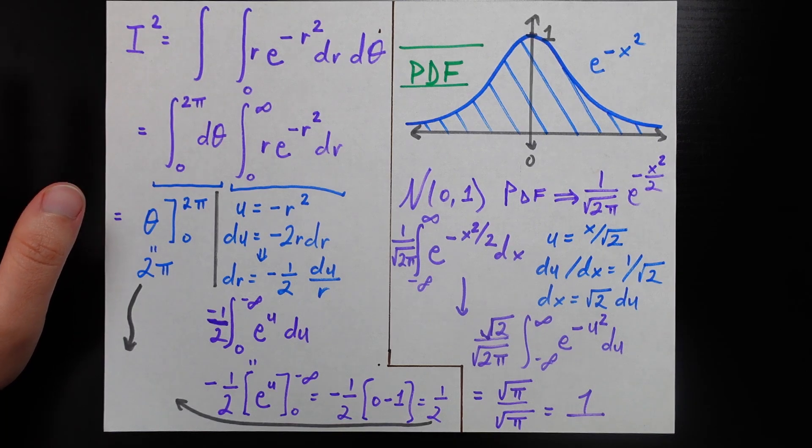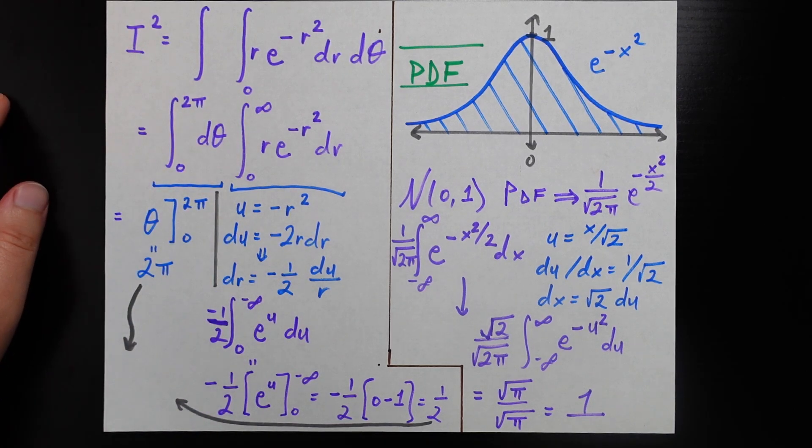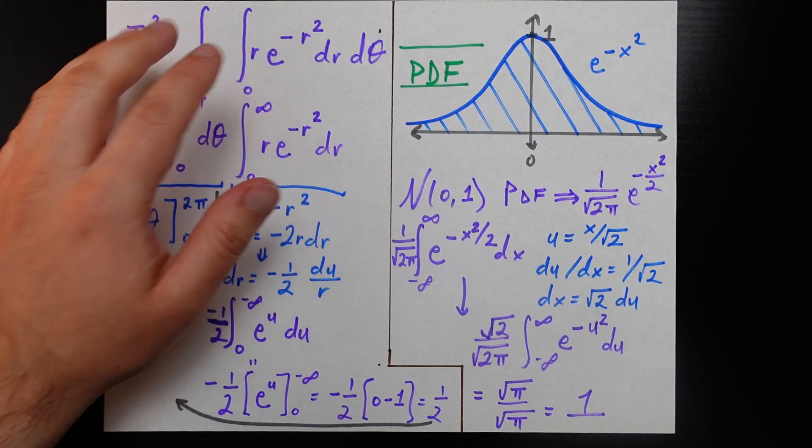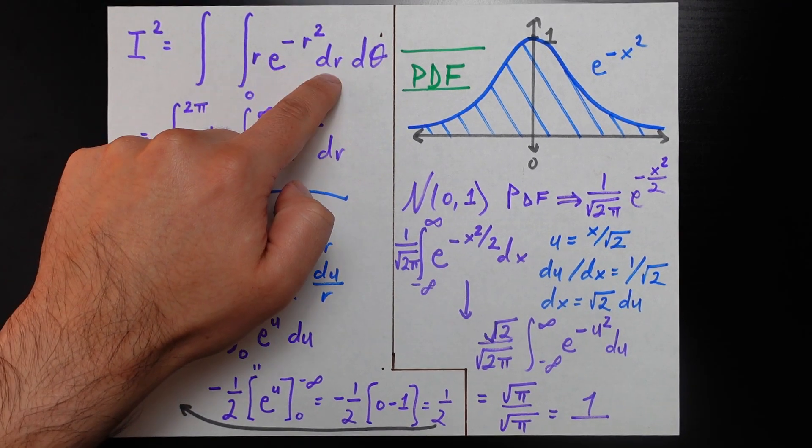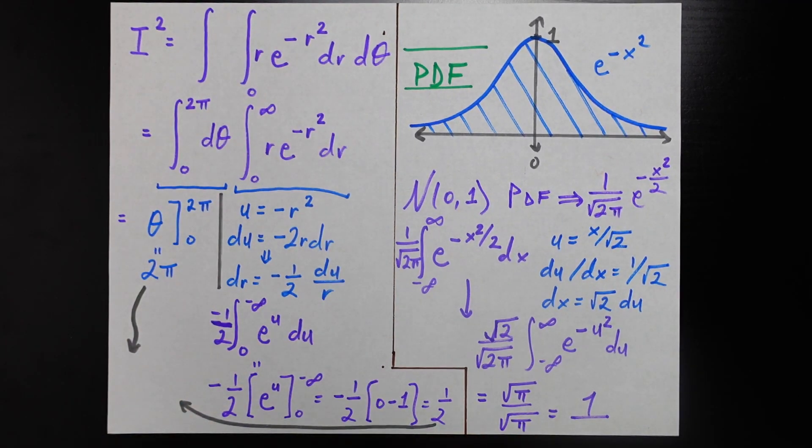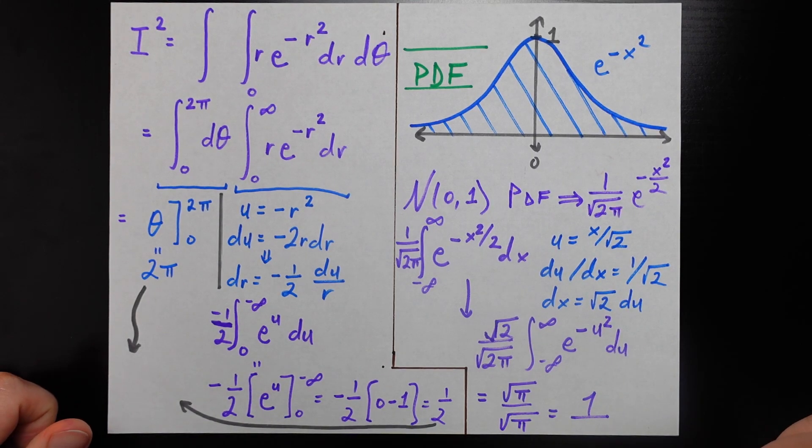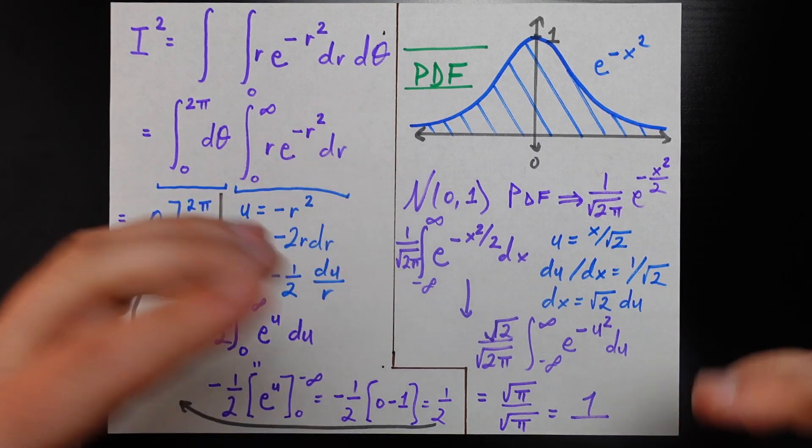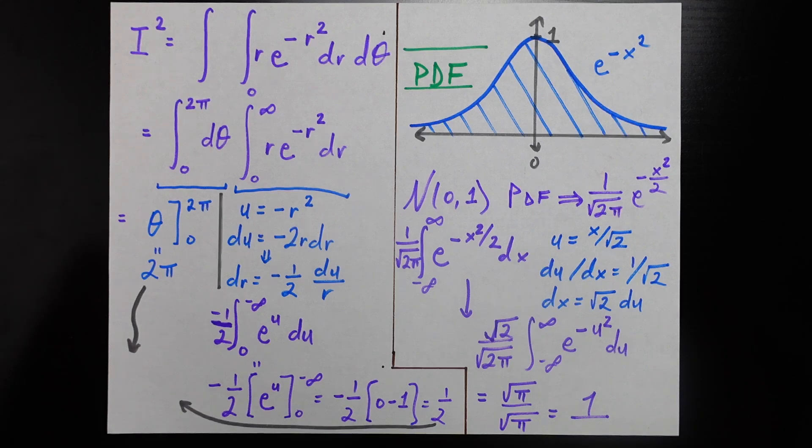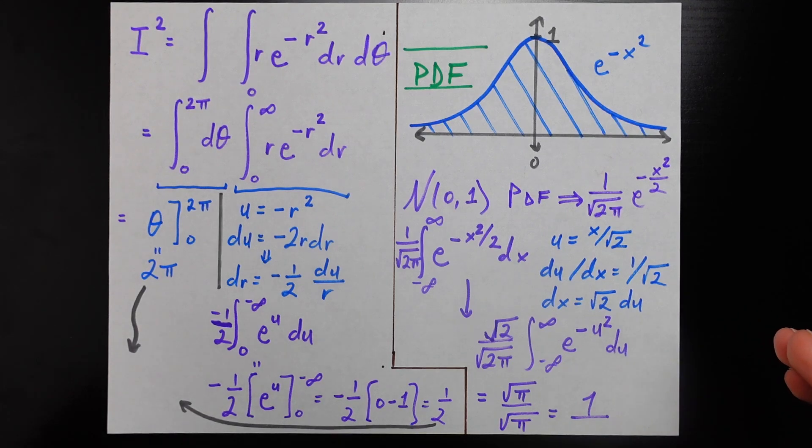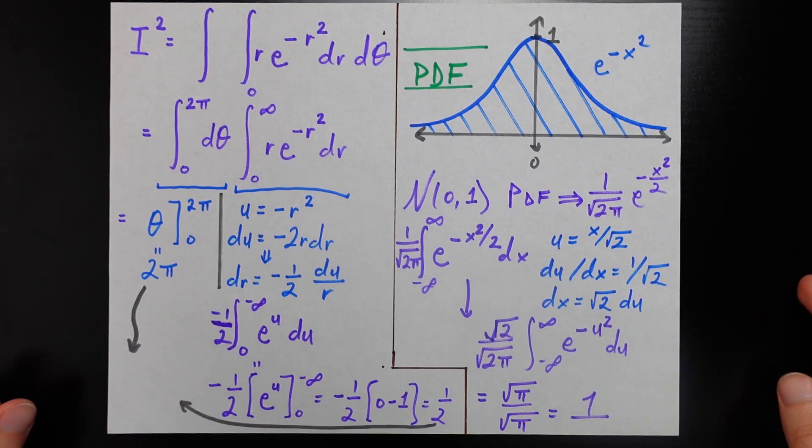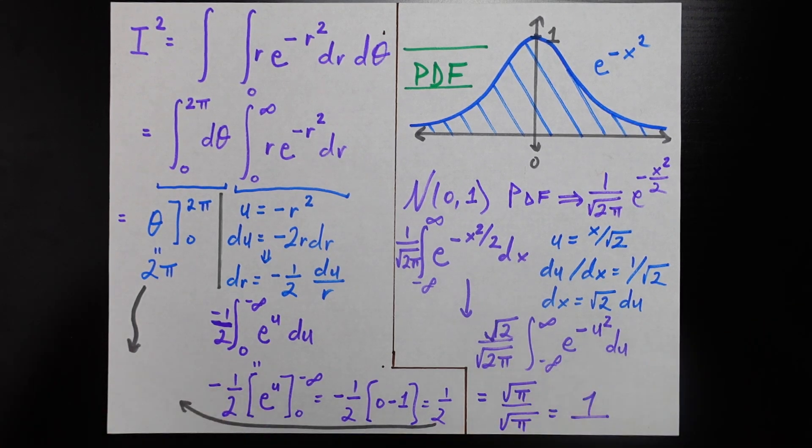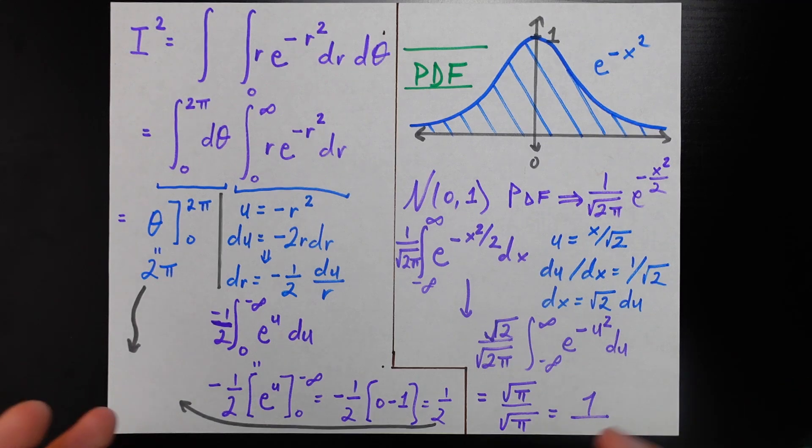That integral, I squared actually, is now written as this double integral of R times e to the negative R squared dr d theta. Initially it was e to the negative x squared plus y squared, which is e to the negative R squared, and dx dy is R times dr d theta. What are the new bounds? We're going over the entirety of the R2 space.